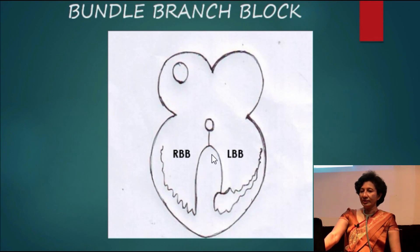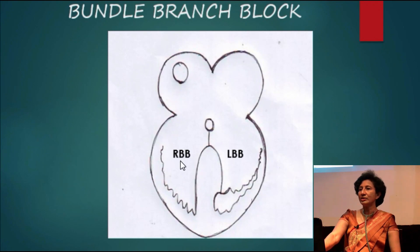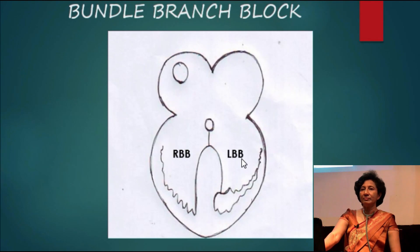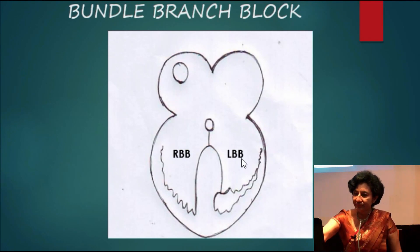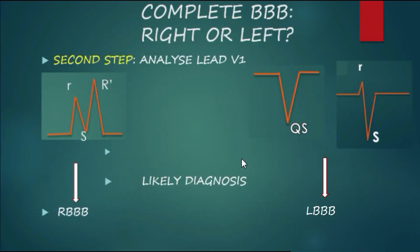In bundle branch block, if there is right bundle branch block in an otherwise healthy heart, that is called isolated right bundle branch block. As I mentioned, the first step is rhythm: if it is in sinus rhythm or if there is atrial tachyarrhythmia on the baseline, the most likely diagnosis is one of the bundle branch blocks.